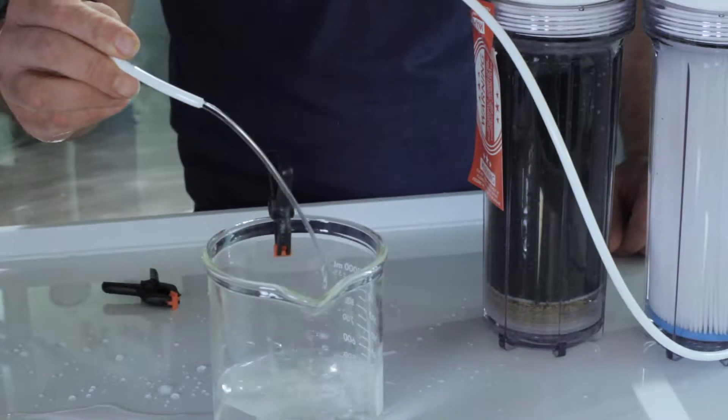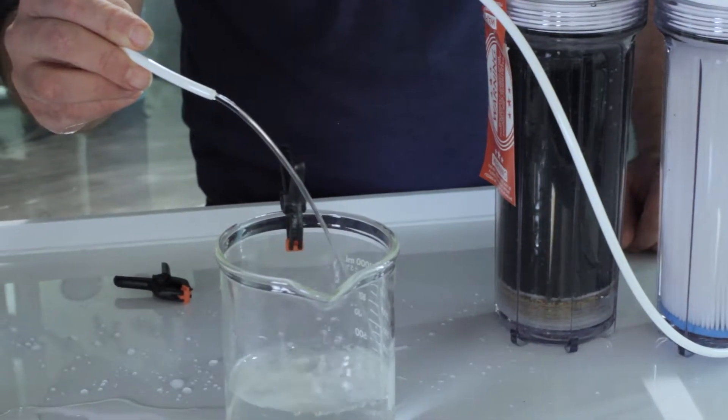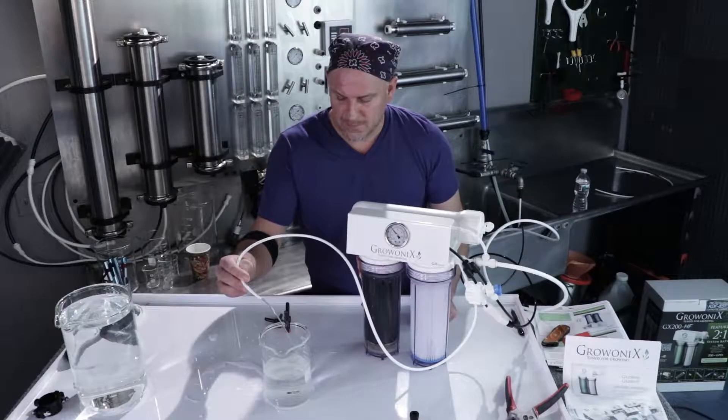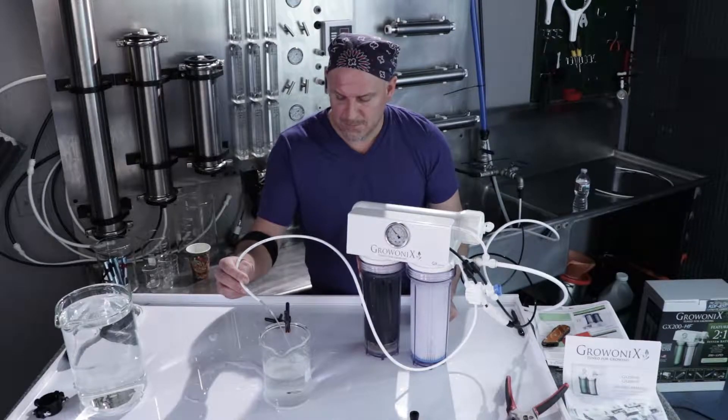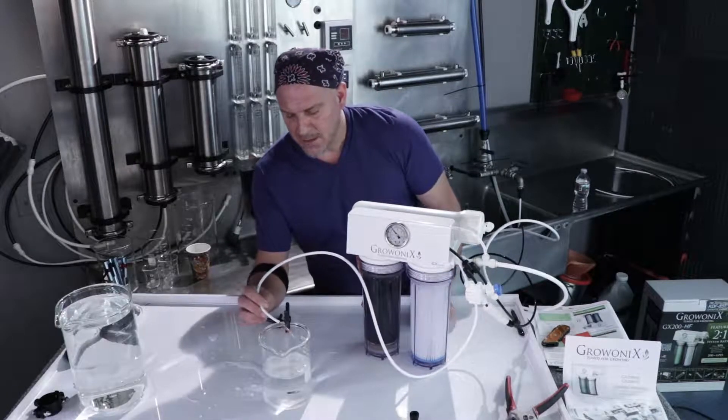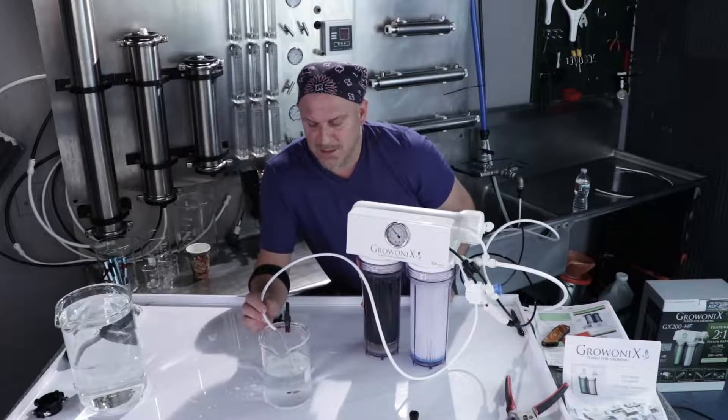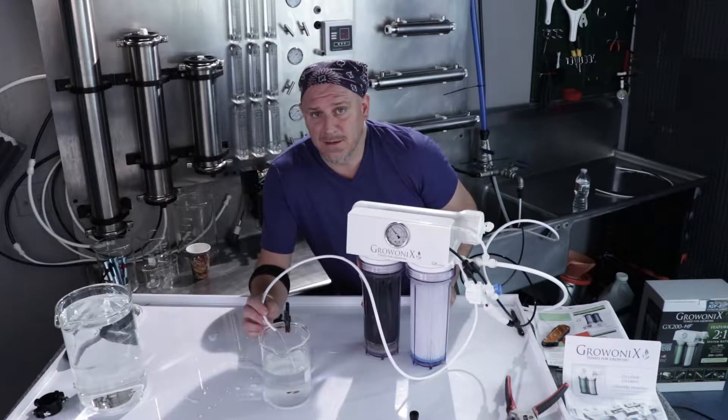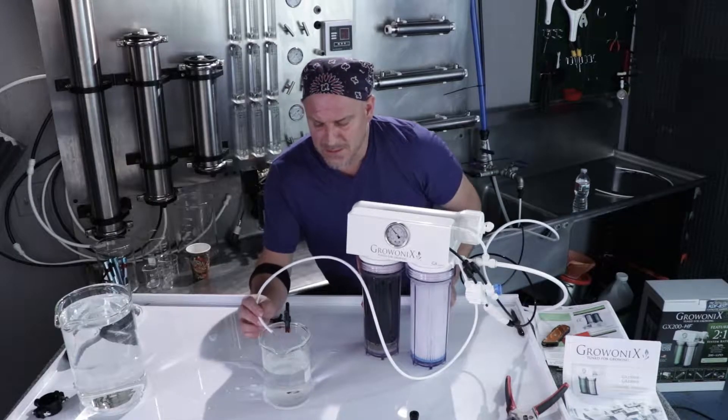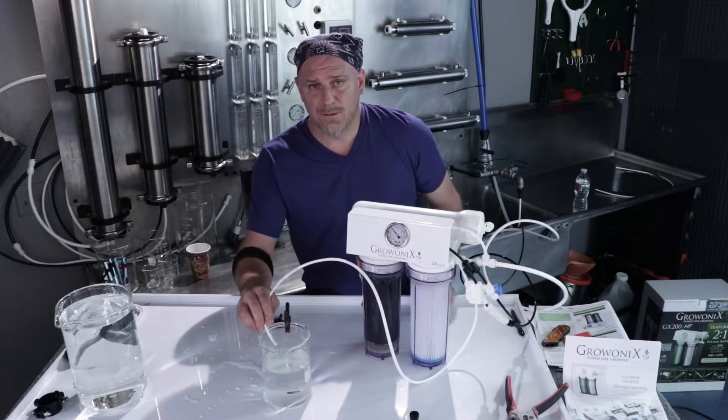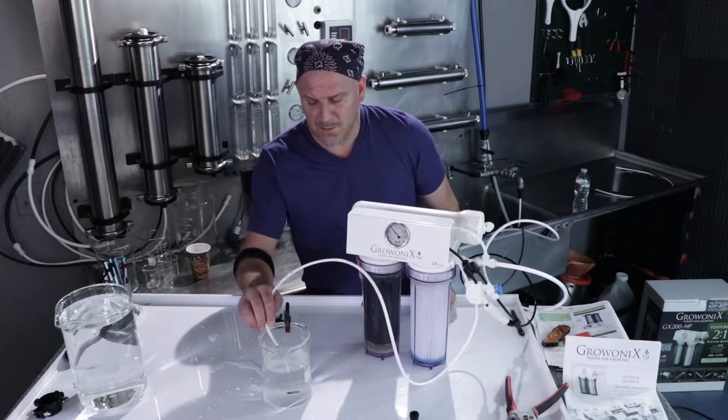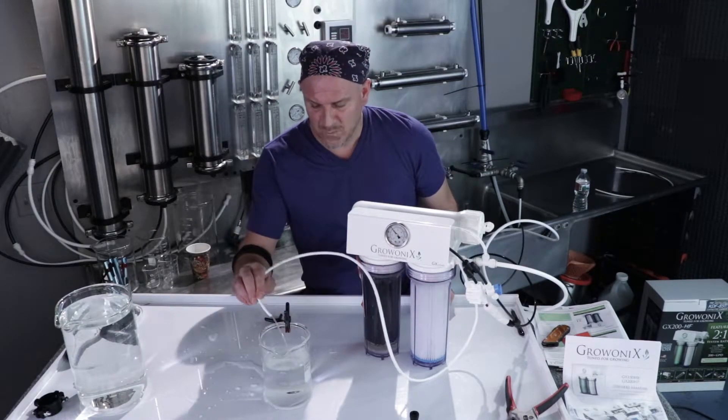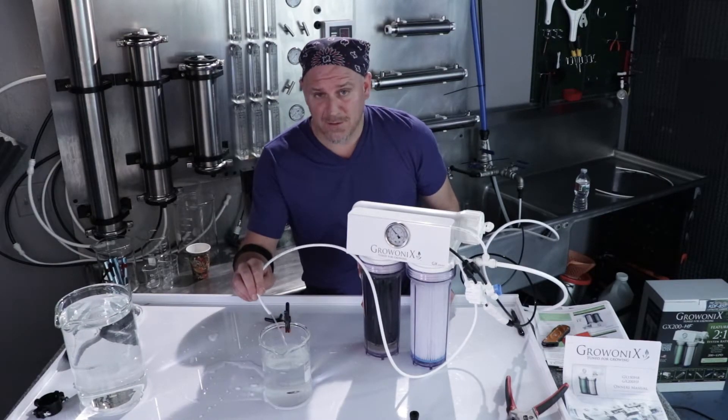You can still see the bubbles coming out of the permeate line because the permeate side of the membrane still needs a good flush. You'll also notice that on the first initial water that comes out, the TDS will be a little higher, and that's the storage solution. Membranes need to break in. They're scientific instruments. This membrane's really going to break in over the first few days of using it and flushing water through it. It's going to speed up production, the rejection's going to get better. And that's it for hooking up a GX200.